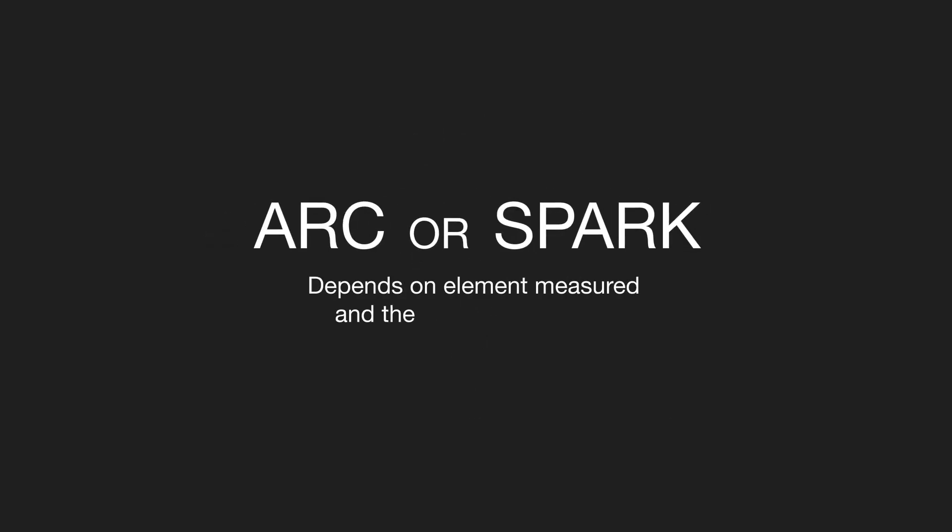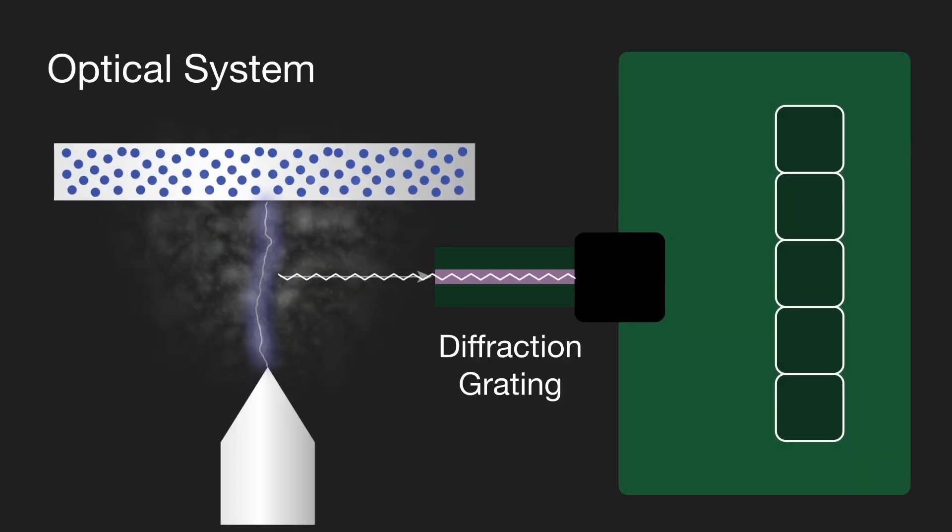These two modes of operation are used depending on the element measured and the accuracy required. The second component is an optical system. The multiple optical emission lines from the vaporized sample, known as a plasma, pass into the spectrometer.